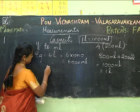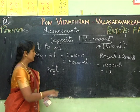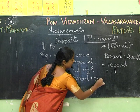If I have 3 and a half liters, how can I change it to mL? I can write it as 3 liters plus half a liter. That is 3000 mL plus 500 mL, which equals 3500 mL.